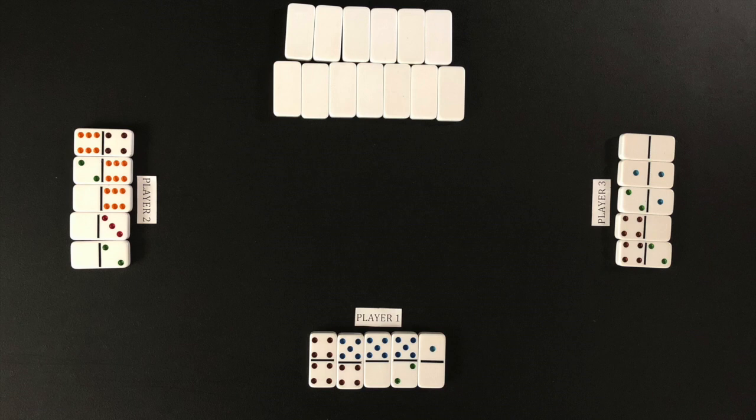The player with the highest double starts the first round. After the first round the starting player rotates left each round.